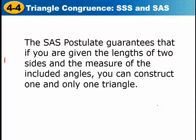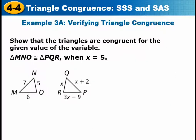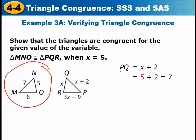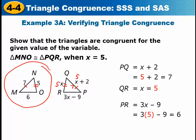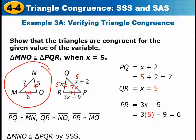The SAS postulate guarantees that if you are given the lengths of two sides and the measure of the included angle, you can construct one and only one triangle. Here we need to show triangles are congruent for x = 5. Plugging five in: side PQ gives 7, another side gives 5, and the last side gives 6 — matching the other triangle's sides of 7, 5, and 6. Therefore, by side-side-side, the two triangles are congruent.